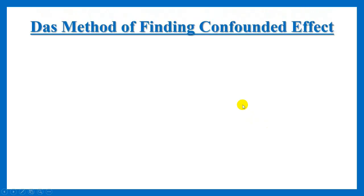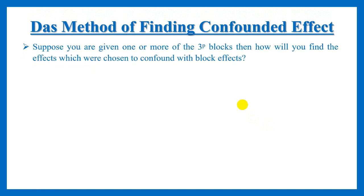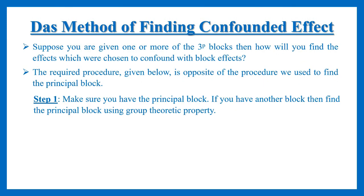So suppose a 3^k design is confounded in 3^p blocks, and you are given one of the 3^p blocks — it might be the principal block or any other block. Then the procedure to find the confounded effects is: first, you have to make sure that you have a principal block. If you don't already have a principal block, then you have to find the principal block.